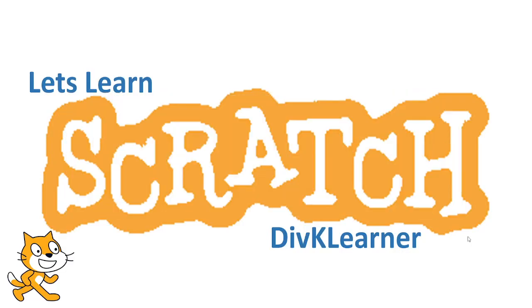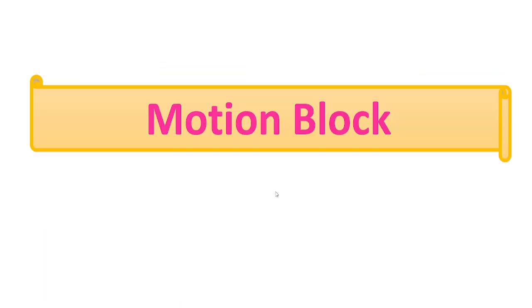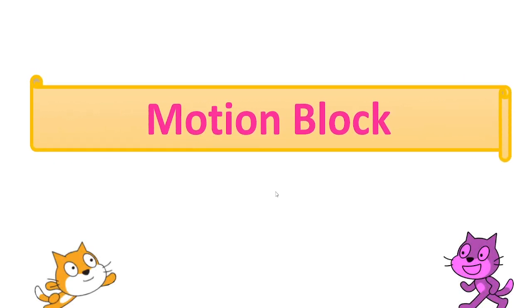Hello everyone, I hope you all are good. Let's learn Scratch with FK Learner. In today's video, we will talk about the motion block. Motion block is used to manage the movements, turns, and rotation of the sprite. It helps a programmer manage all movements, turns, and rotation on the stage for the sprite. We cannot use motion blocks for the stage. The color of motion block is blue in Scratch, and we have a total of 18 blocks under the motion block.